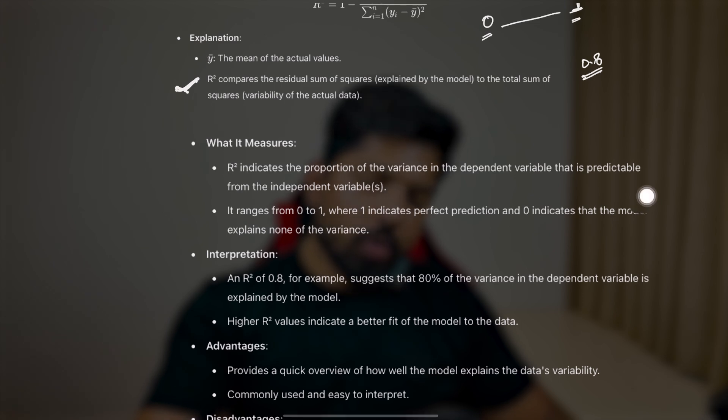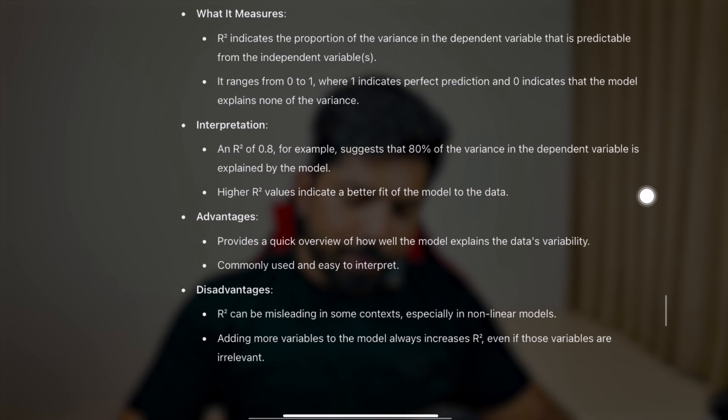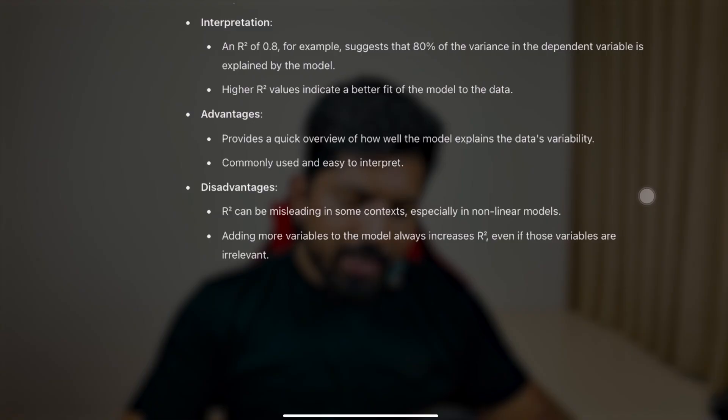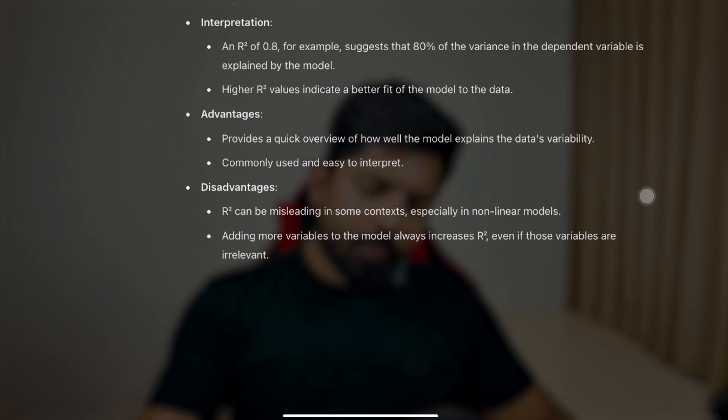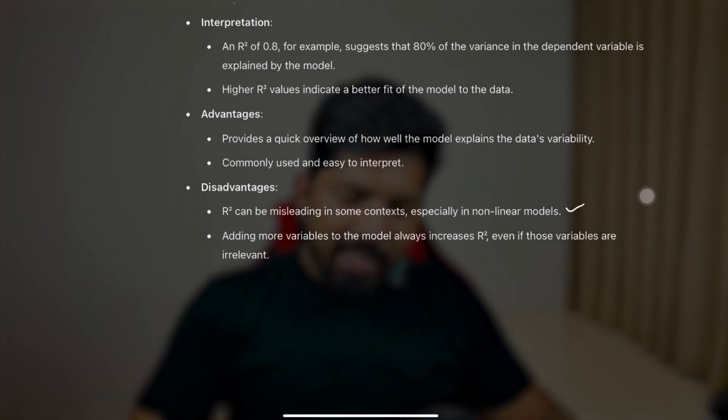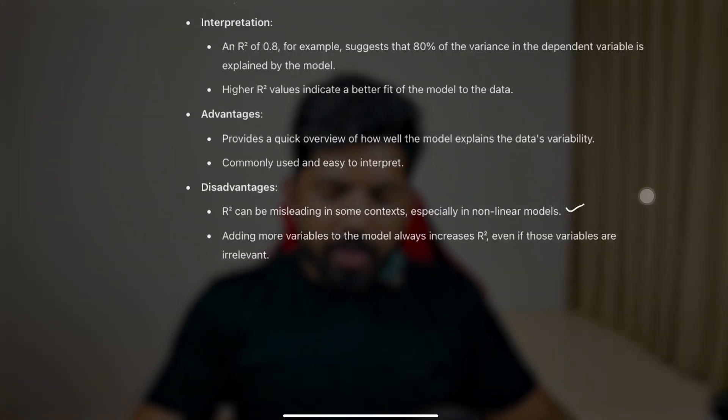Higher R-squared values indicate a better fit of the model to the data. Advantages: it provides a quick overview of how well the model explains data variability and is easy to interpret. Disadvantages: R-squared can be misleading in some contexts, especially in non-linear models. Also, adding more variables to the model always increases R-squared even if those variables are irrelevant — that is a key disadvantage. These were some basic regression metrics. I'll see you in the next video — bye bye, take care, have a nice day.